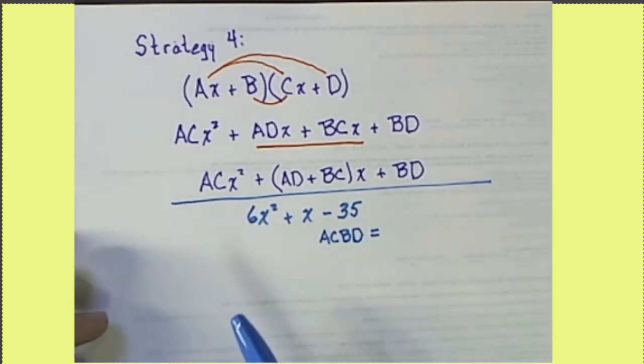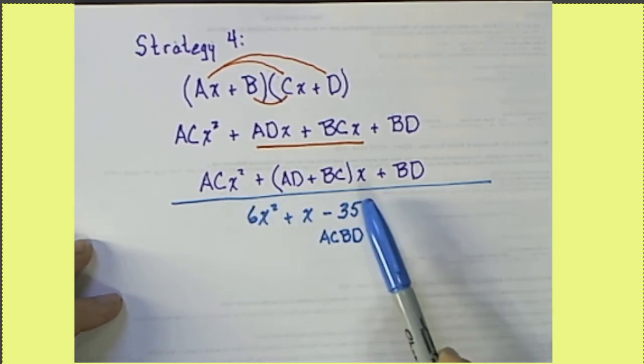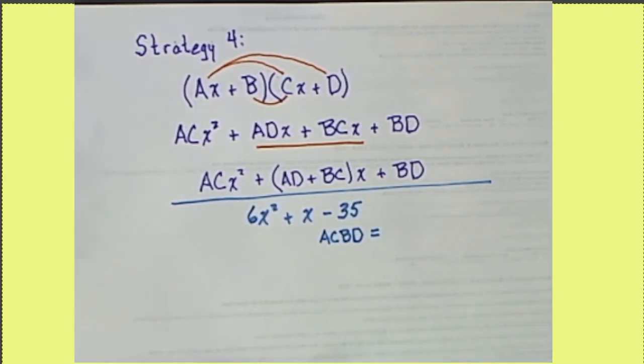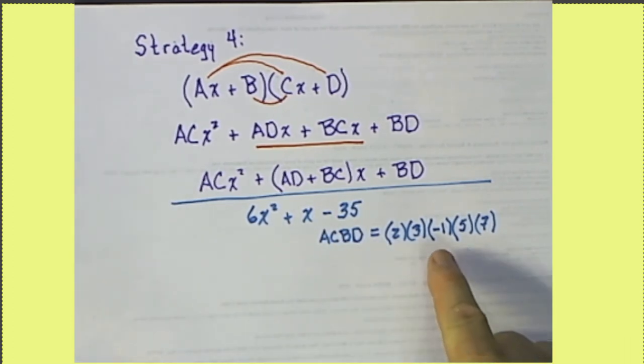So let's consider what AC times BD is, but let's factor it completely as we go. The 6 factors completely as 2 times 3. The minus 35 factors as minus 1 times 5 times 7.